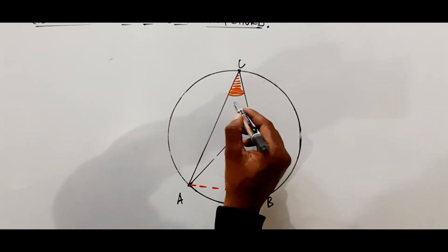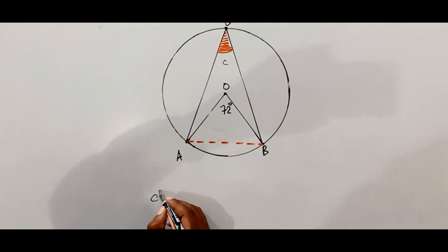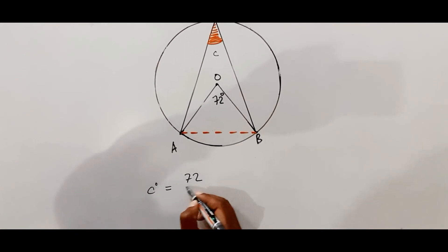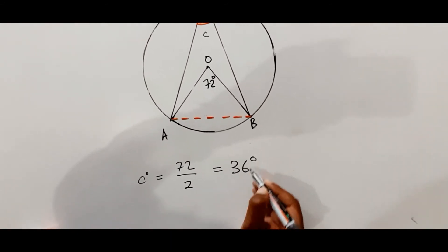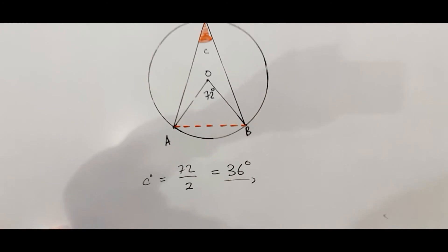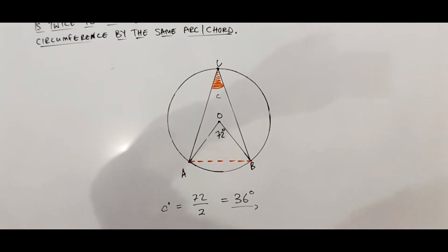Therefore, if we were to look for this angle - let's call this angle C - it means that angle C would be equal to 72 divided by 2, which gives us 36 degrees. That's what it simply means.